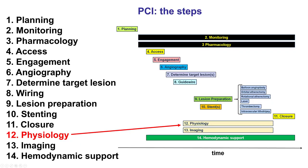Coronary physiology is the 12th of the 14 steps of percutaneous coronary intervention, listed 12th after access closure because it is not performed in all procedures. However, when performed, it is usually done after diagnostic angiography to determine the hemodynamic significance of lesions and help determine the target lesion, and also sometimes after PCI is completed to determine whether an optimal result has been achieved.